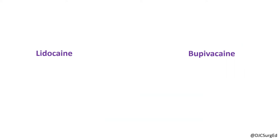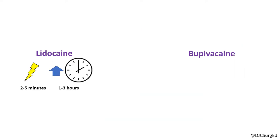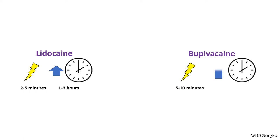Local anesthetics like lidocaine have a quick onset but short duration of action, whereas anesthetics like bupivacaine have a slower onset but a longer duration of action.